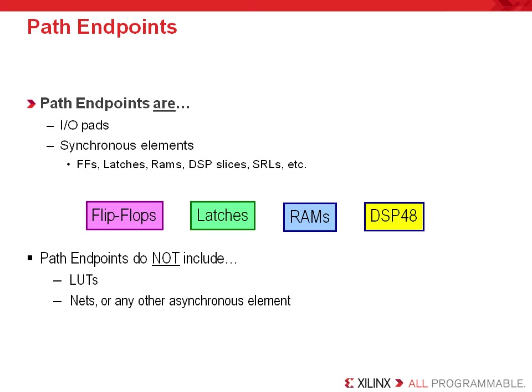Most new designers would expect LUTs to be a path endpoint, but they are a purely asynchronous element. However, note that if a LUT is reconfigured as a RAM or a shift register LUT, it uses a clock port and becomes synchronous, and thus can be a path endpoint. So when you think about improving the timing of your design, remember that you are first grouping path endpoints — and these are the only types: IOPads and synchronous elements.